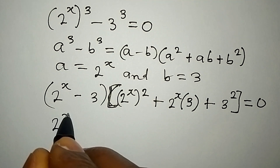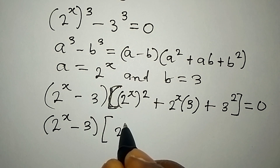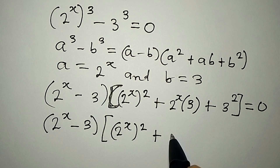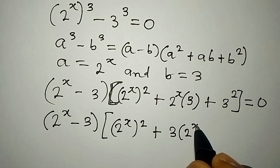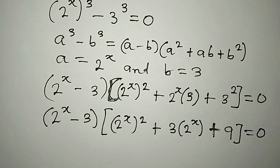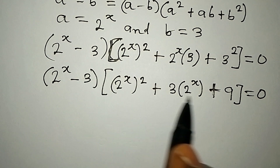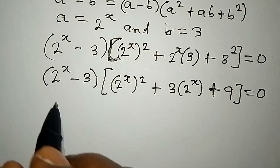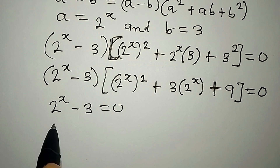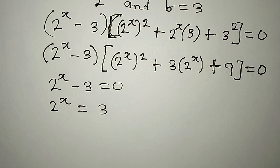Now let's continue. We have (2 to the power of x minus 3), times (2x to the power of 2, plus 3 times 2 to the power of x, plus 9), and the whole of this is equal to 0. Now let's solve this completely. From here, we can either say that the first factor is equal to 0 or the second factor is equal to 0. Picking the first: 2 to the power of x minus 3 equals 0, meaning 2 to the power of x equals 3.